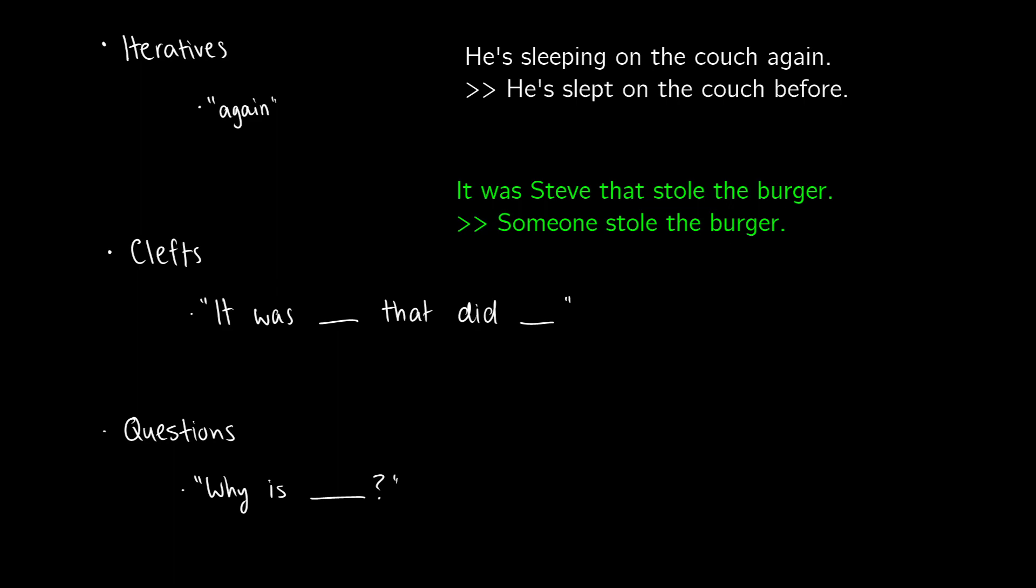If I negate this - 'It was not Steve who stole the burger' - I'm still presupposing that someone stole the burger, I just don't know who it is. Clefts are another type of trigger for presupposition.